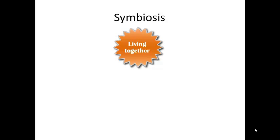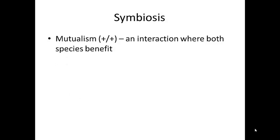Symbiosis is a word we use when describing two or more different species that are living together and interacting with each other. There are three major types of symbiosis. The first one is mutualism. This is an interaction where both species benefit from the relationship. Notice the word mutualism has the same root as the word mutual — both organisms get something they need out of the relationship. They mutually benefit from each other.